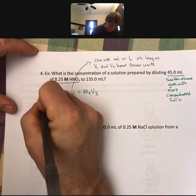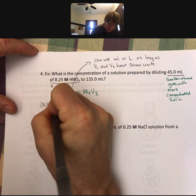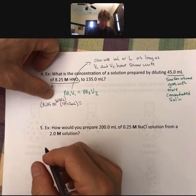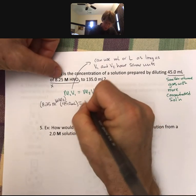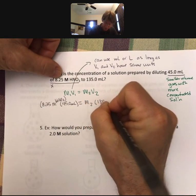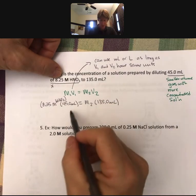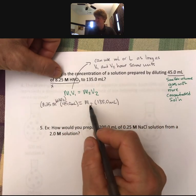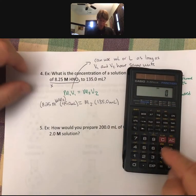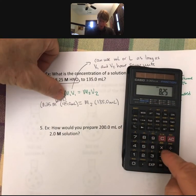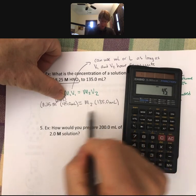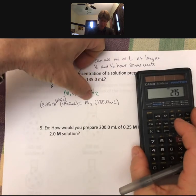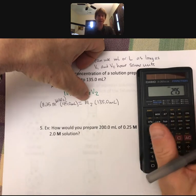I've got my 8.25 molar, 45.0 milliliters HNO3 multiplied together, equal to M2 and V2, which is 135.0 milliliters. My units of milliliters will cancel out. My math is 8.25 times 45 divided by 135, and I get 2.75 molarity nitric acid.